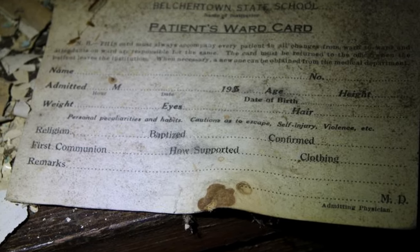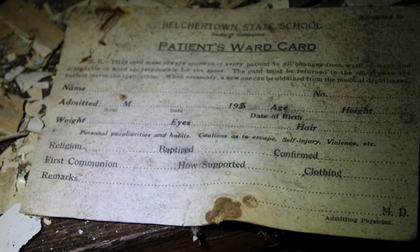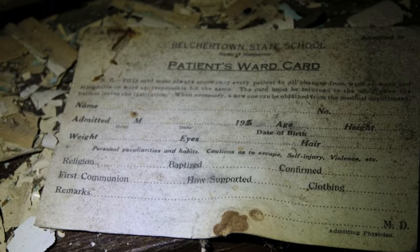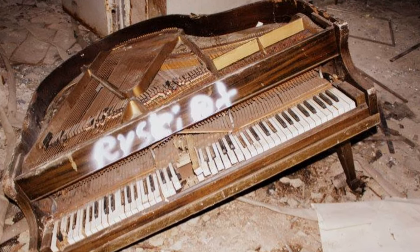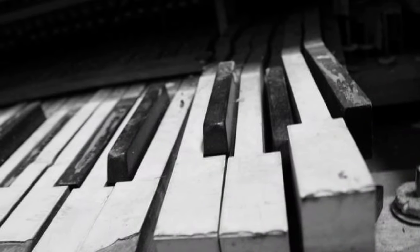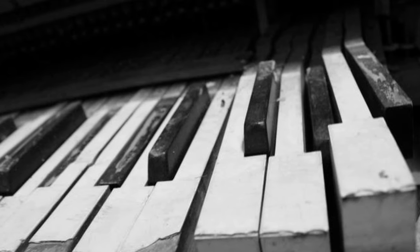People who sought out refuge at asylums or who were sent there by their families had many different types of issues from each other. Some were severely disturbed. Others were handicapped. But many were citizens who would have been able to function well in society if they were just given the chance.